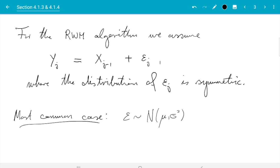And if we say the distribution of epsilon j is symmetric, this forces us to set mu equals to zero. So it must be epsilon is normally distributed with mean zero and variance sigma squared.